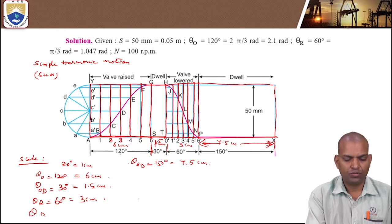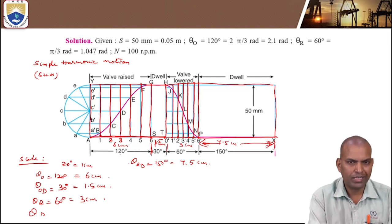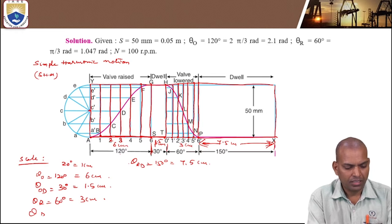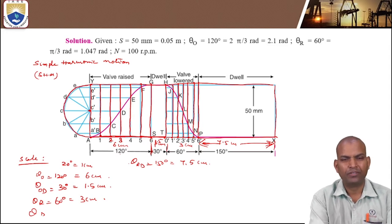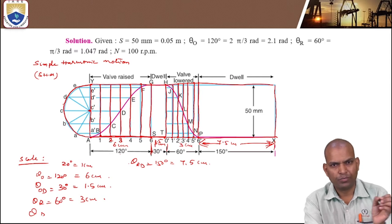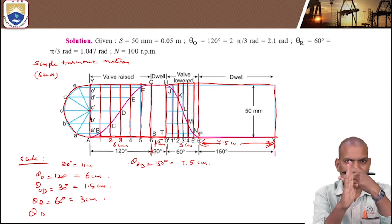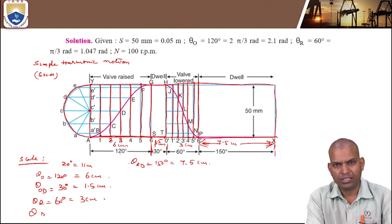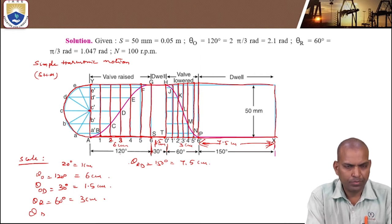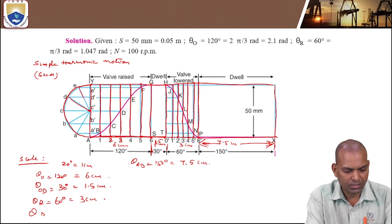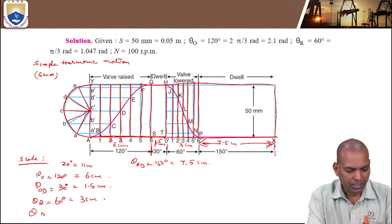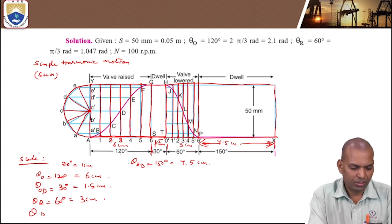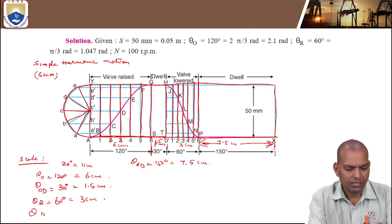After drawing the vertical lines, for simple harmonic motion: on the left-side vertical surface, make a center point and draw a semicircle. Divide the semicircle into an equal even number of angular divisions — six parts, matching the six divisions of the outstroke. The six division points on the semicircle will intersect with the six vertical lines. Each part of the semicircle is 180/6 = 30 degrees: so 30, 60, 90, 120, 150, 180 degrees.